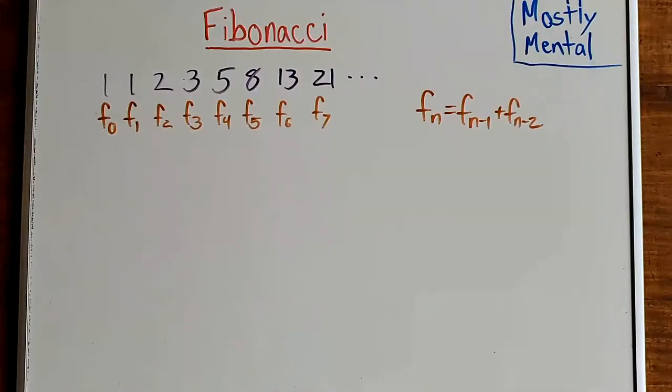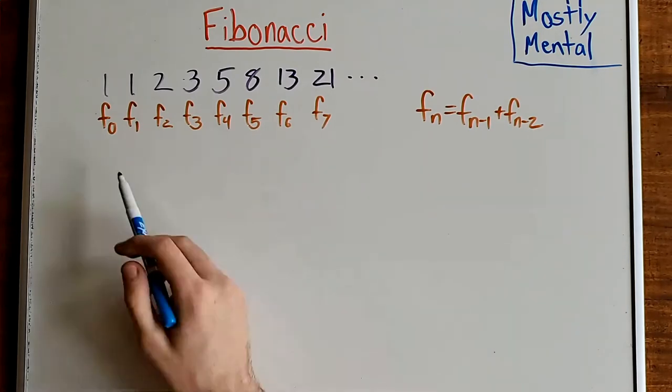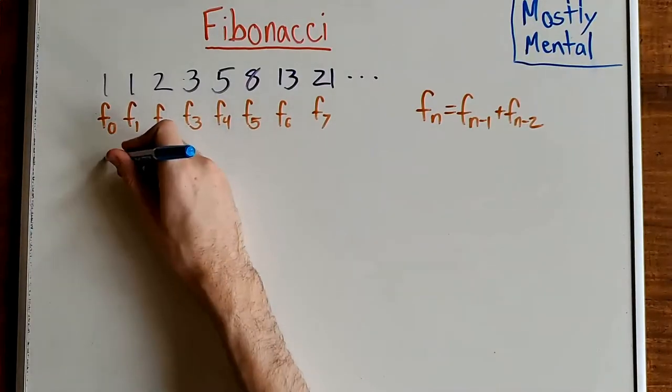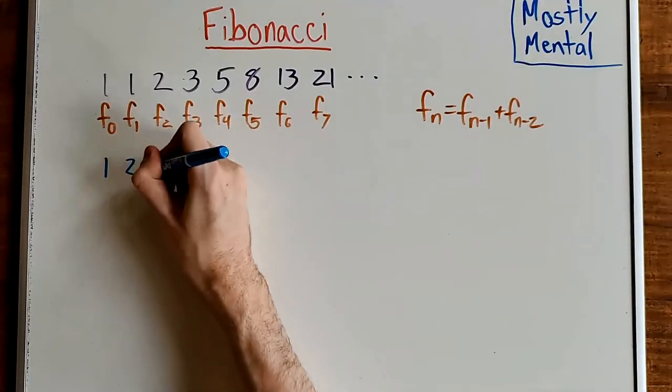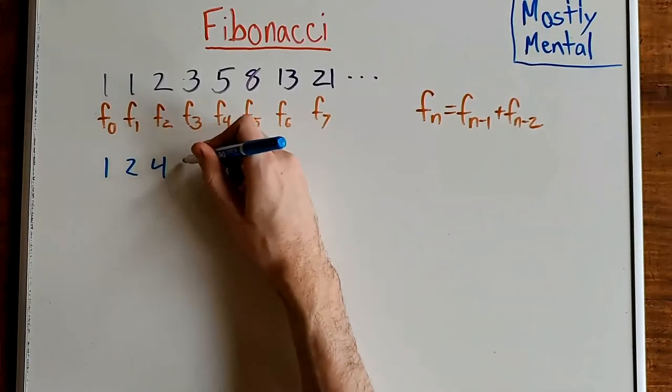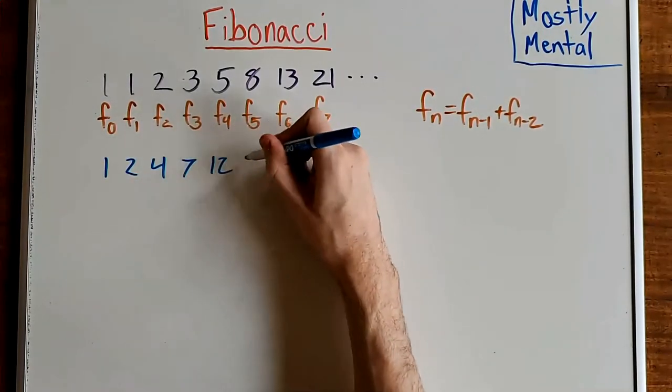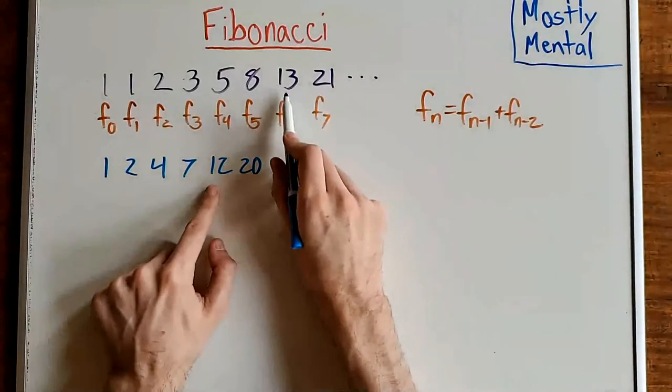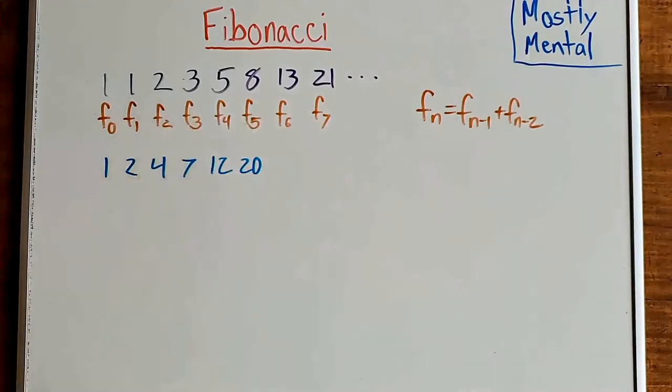Okay, so what can we do with these tilings? First, let's find a pattern. Let's try taking the running total of the Fibonacci numbers. So, we start with 1, plus 1 is 2, plus 2 is 4, 7, 12, 20. Huh, looks like we're just one shy of a Fibonacci number each time.